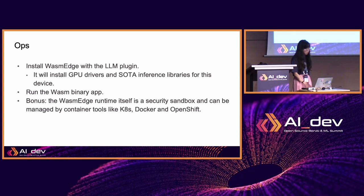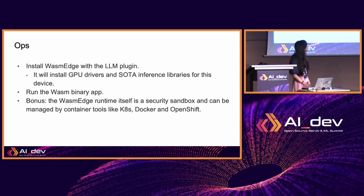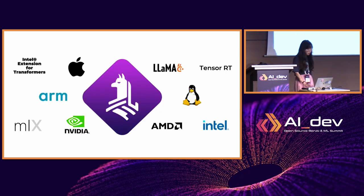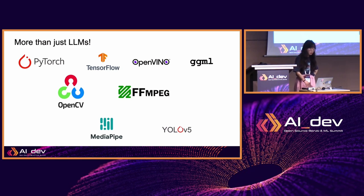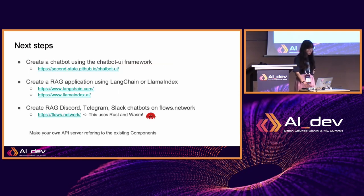For ops, you just install WasmEdge with the large language model plug-in and run the WasmEdge binary. WasmEdge itself is a security sandbox, and it can be orchestrated by Kubernetes, Docker, and OpenShift. More than large language models, there are other model types supported, and you can always add more by contributing to the open source project.